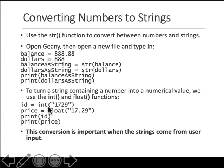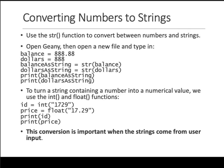If you want to convert strings into integers or floats, you can cast them using int() and float() inside parentheses. This conversion is needed when you take user input, because whenever you ask the user to enter anything from the keyboard, it is read as a string. So if you want integers, they will be read as strings and you cast them into integers or floats in this manner.